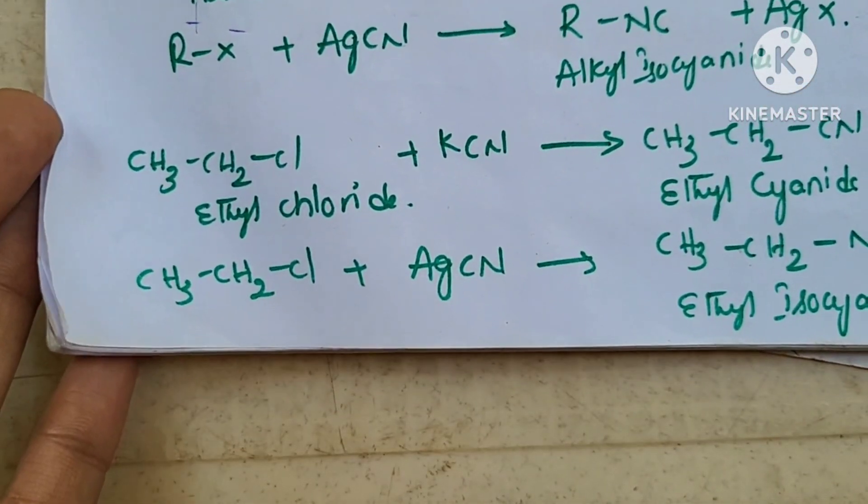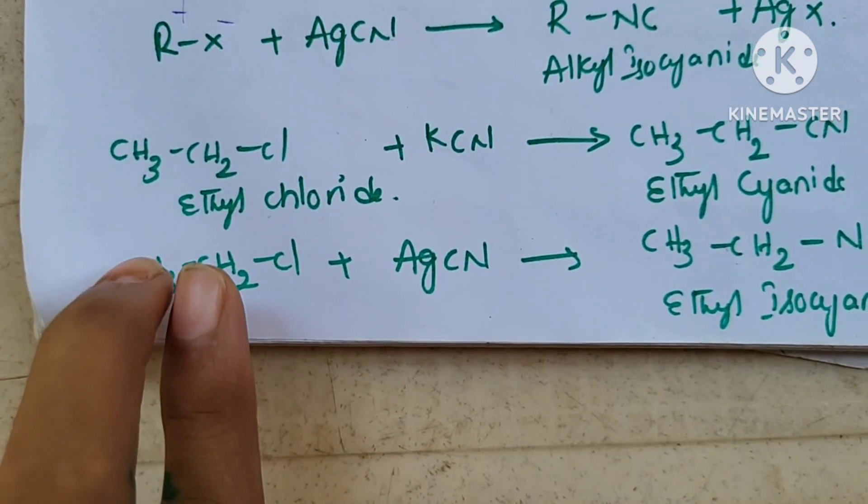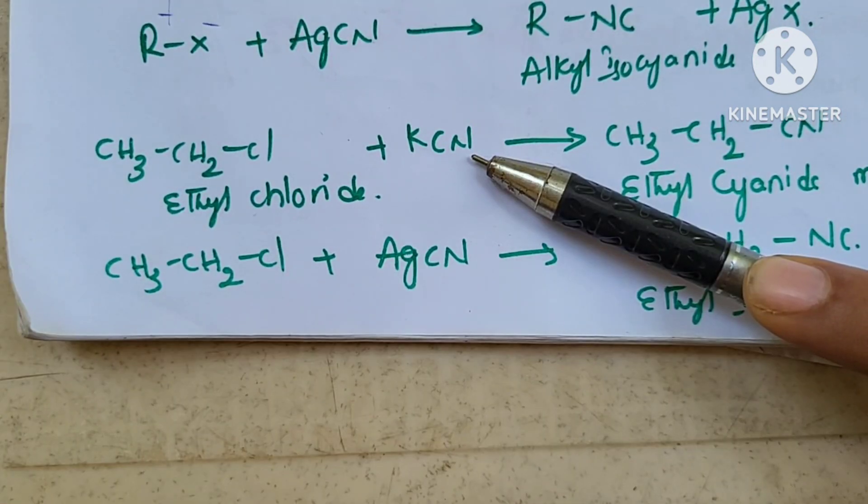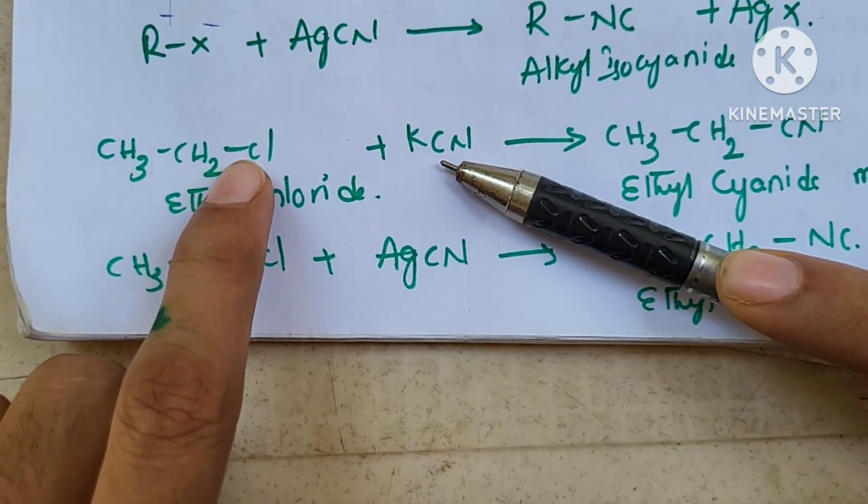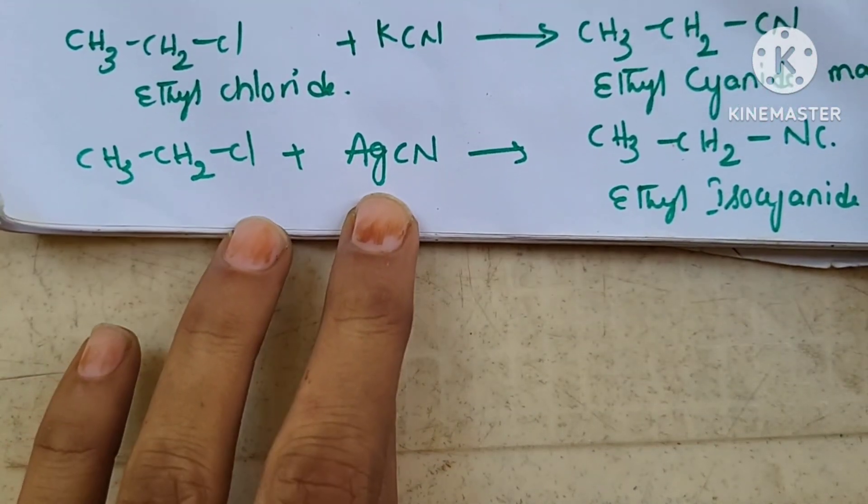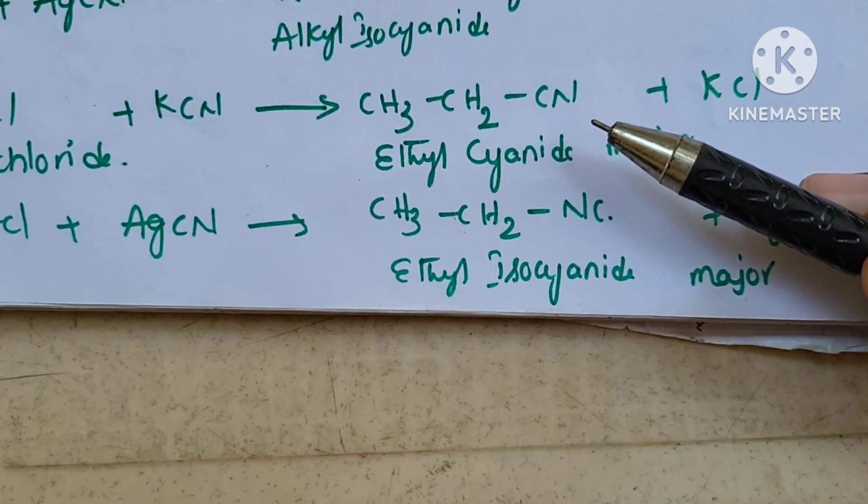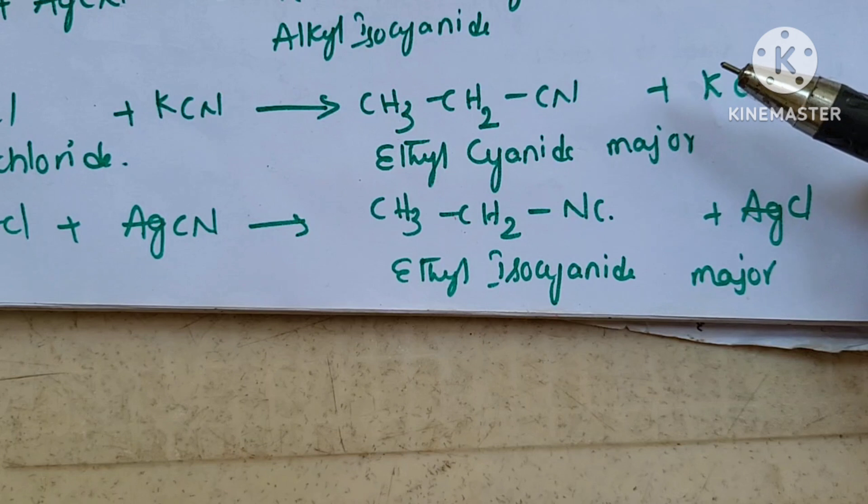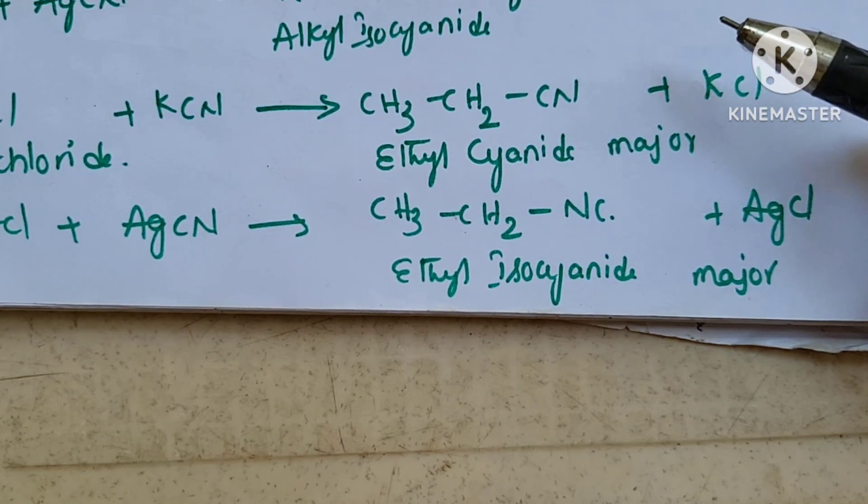For example, ethyl chloride has two carbons and chloride. Chloride is the leaving group. With KCN, CN is ambident nucleophile. Carbon attacks, so ethyl cyanide is the major product. With AgCN reaction, ethyl isocyanide is formed. Alkyl cyanide from KCN reaction is the major product.